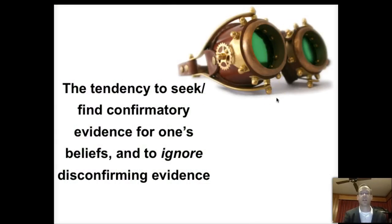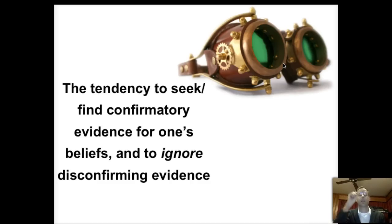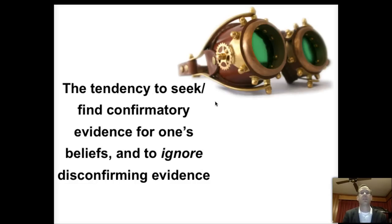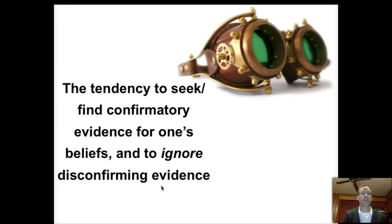That happens with confirmation bias. We all have our own glasses that we put on — our own perspective through which we see the world — and there's no way to get around it. They're locked to our face. If we want to maximize the number of true beliefs we have and minimize false ones, we need to be aware of the lenses we use to see the world. Confirmation bias is the tendency to seek or find confirming evidence for what you believe and to ignore all the disconfirming evidence you're presented with.